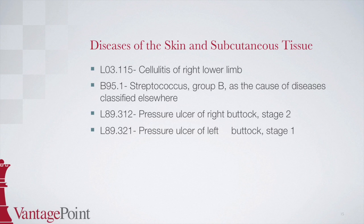The last code is L89.321, pressure ulcer of left buttock, stage 1. To locate this code, start at ulcer in the alphabetic index, then find pressure indented below — we know from the previous code that decubitus is coded under pressure ulcer. Find stage 1, and then the site, which is also the buttock. This points to L89.3 with a checkbox indicating more digits are required. In the tabular, subcategory L89.3 is for pressure ulcer of the buttock. The subcategory for left buttock is L89.32, then we need a sixth character of 1 to indicate stage 1, giving us a final code of L89.321.